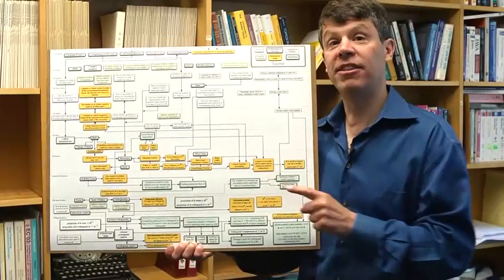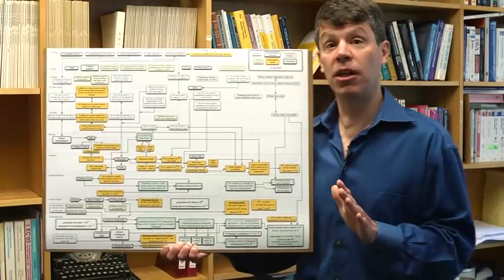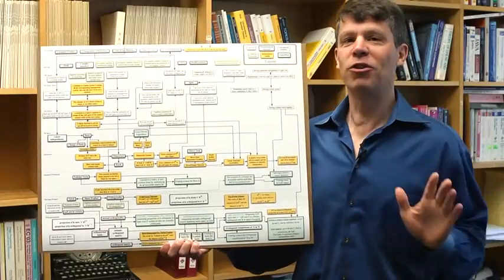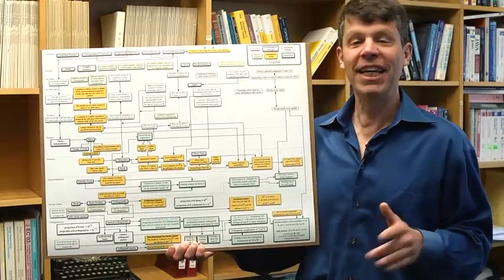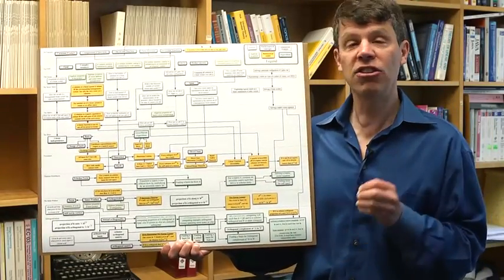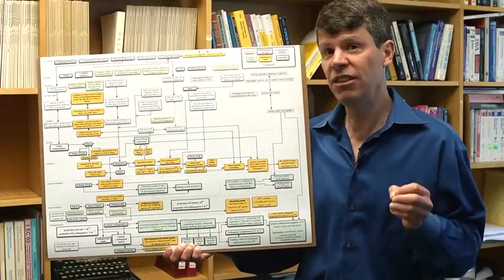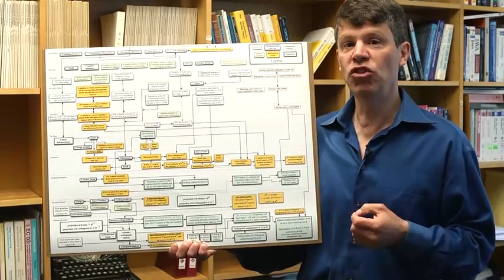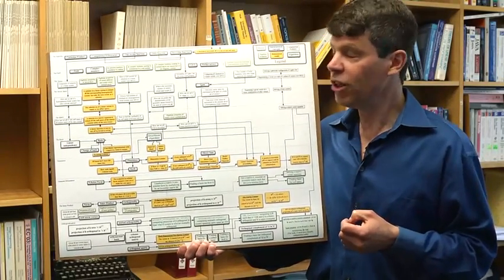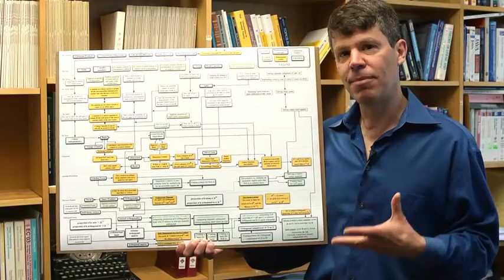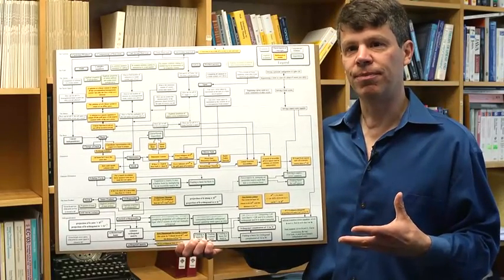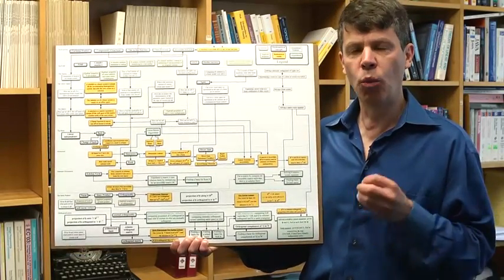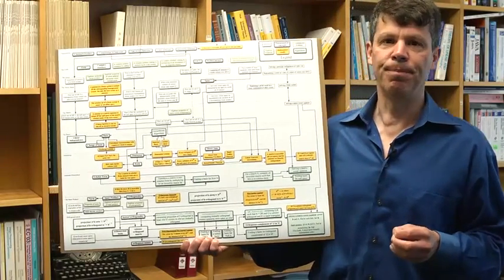A word about this diagram: I'll make it available on the course site, but don't try to read it all. It's a map, and just as you wouldn't read all of a road map, you won't find it useful looking at this until you've covered some of the territory. It's there to help you keep track of where you are and where we're going.